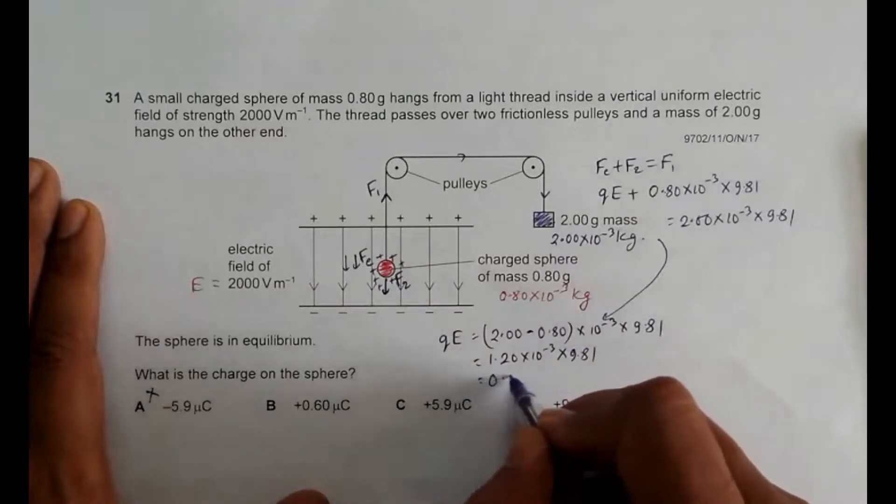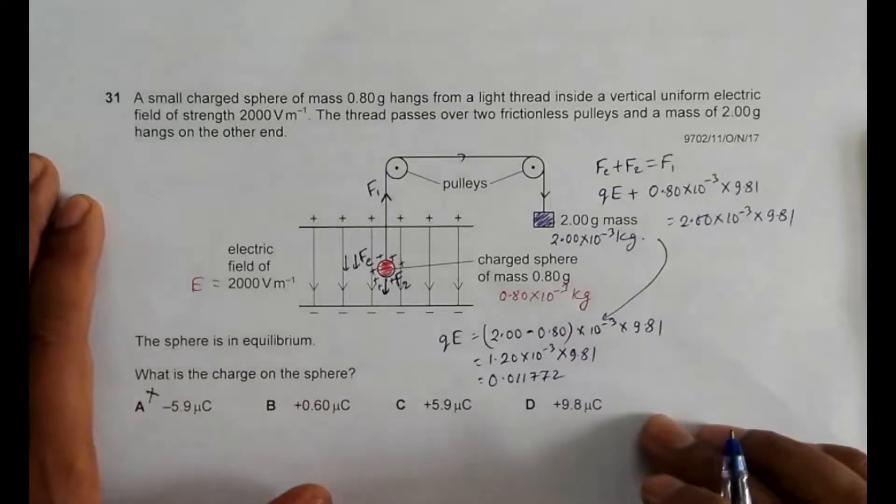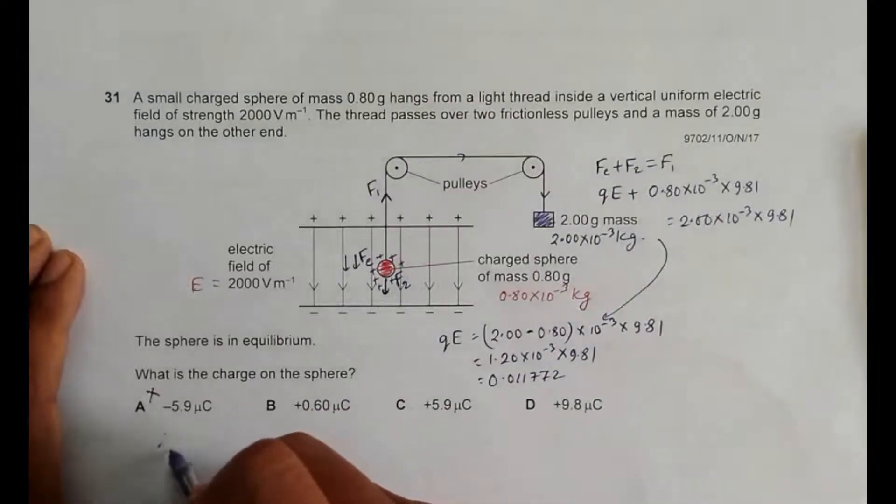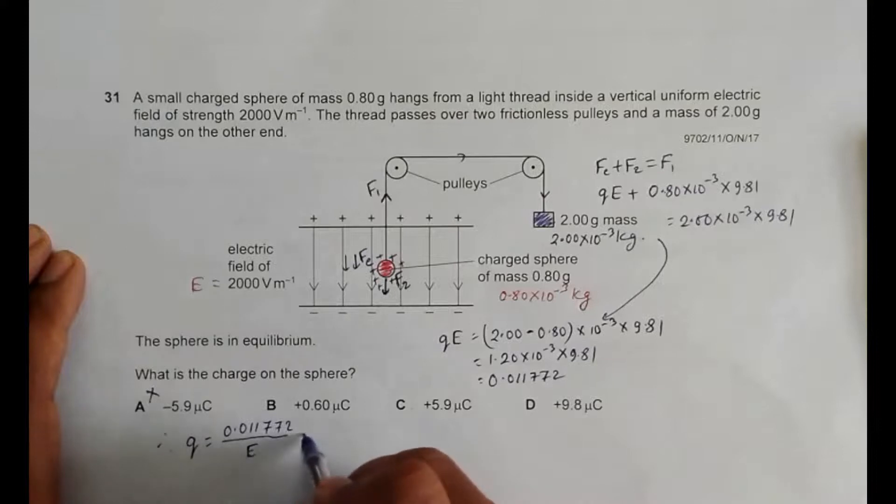0.01177. Now since the electric field is given as 2000, therefore the value of Q is equal to 0.011772 divided by E.